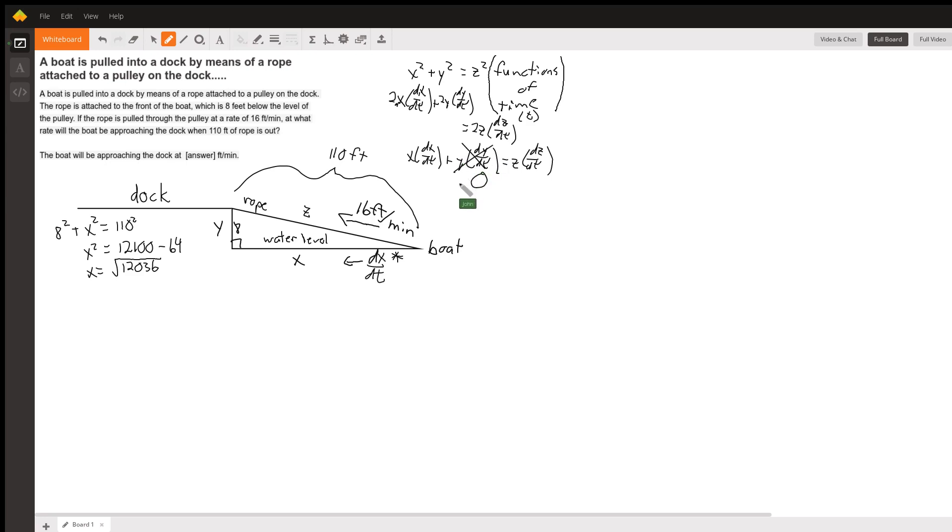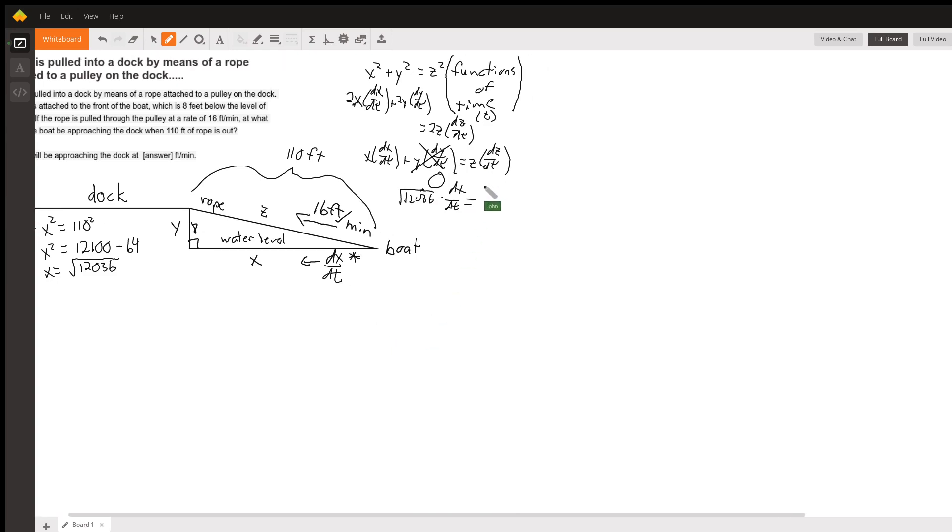So we can effectively eliminate that part of our equation. We know that x is this square root of 12,036. We can say that, and that is times this unknown dx over dt. And this z is 110, and it's times negative 16. So if you multiply 110 times negative 16, we get negative 1,760. And that equals dx over dt square root of 12,036.